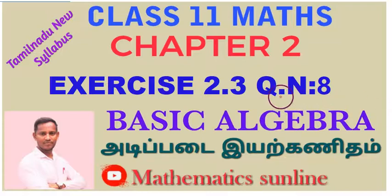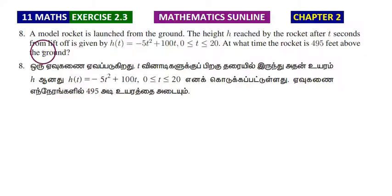Hi students, Exercise 2.3 question number 8. A model rocket is launched from the ground. The height h reached by the rocket after t seconds from liftoff is given by a function. The rocket is coming from the ground, that's what it is saying.